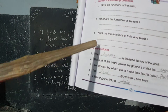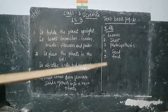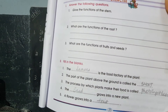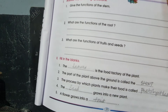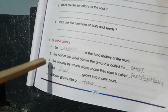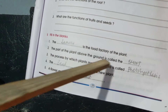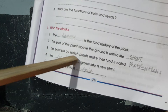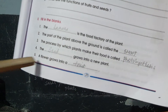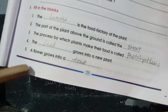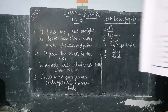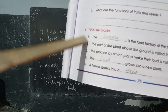Now we have fill-in-the-blanks. Leaves are the food factory of the plant. The part of the plant above the ground is called shoot. The process by which plants make their food is called photosynthesis. A seed grows into a new plant. A flower grows into a fruit. Write the answers in your classwork.